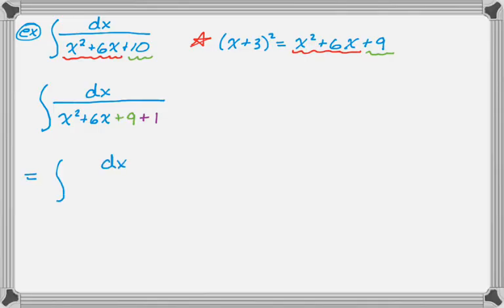So dx, 1 plus the quantity x plus 3 squared. So I've completed the square on the trinomial, and I've moved it around so it looks exactly like what I have memorized. And then this I just kind of recognize is arctan of x plus 3.